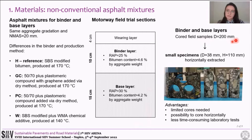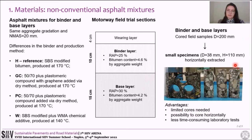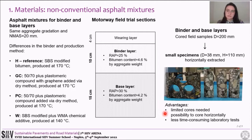Finally, small specimens were horizontally cored, with a height of 110 mm and a diameter of 38 mm. The advantages of this small geometry for laboratory investigation are the limited number of cores needed, the possibility to core horizontally — better simulating the stresses induced in the actual pavement — and less time-consuming laboratory tests.